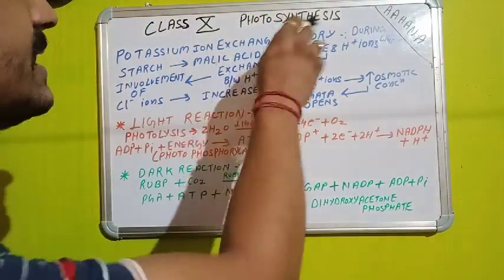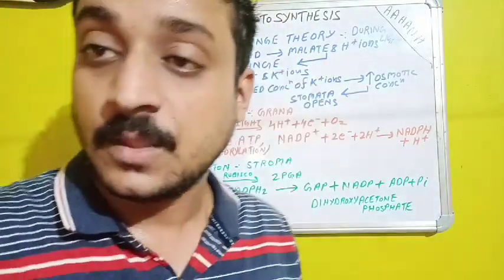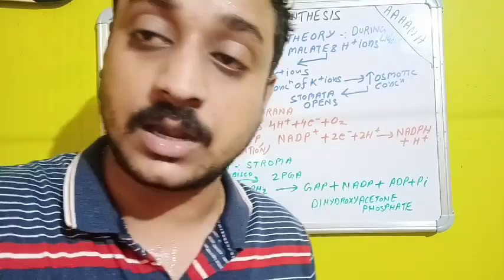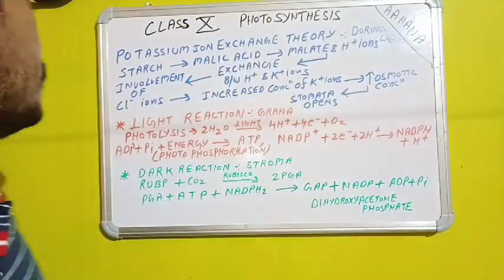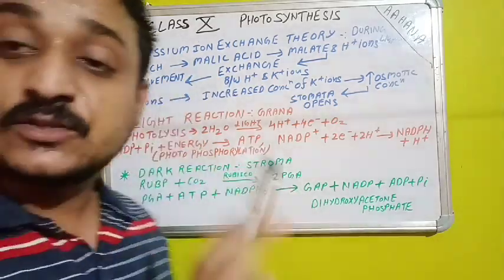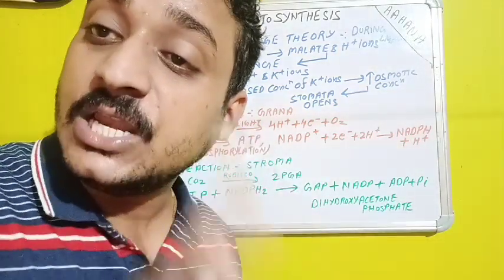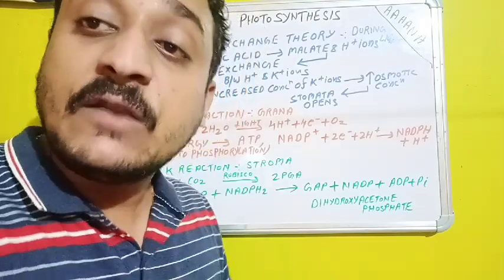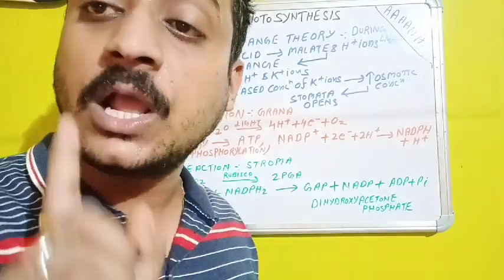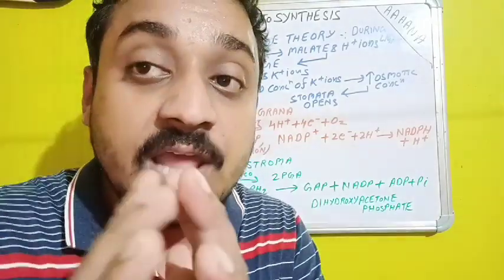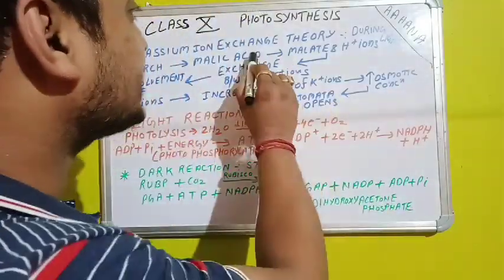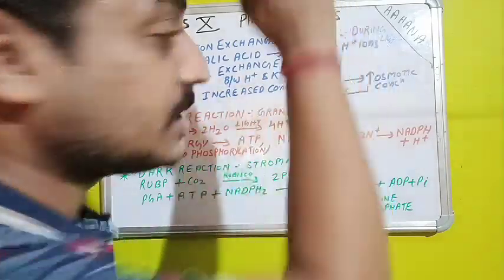The first topic is the potassium ion exchange theory during light — when there is daylight, how the potassium ion exchange theory works to open the stomata. First of all, starch present in the leaves of the plant will convert into malic acid. This malic acid is a very unstable acid, and it will break into malate and H⁺ ions.